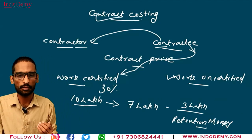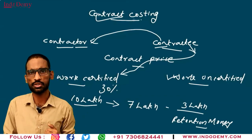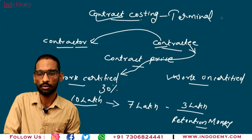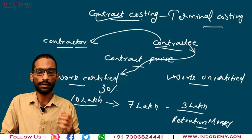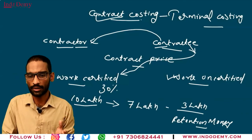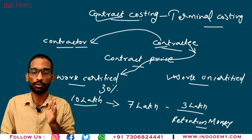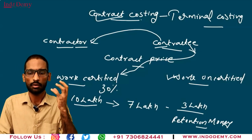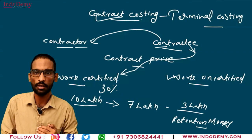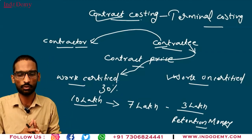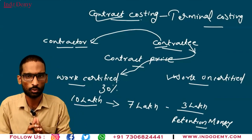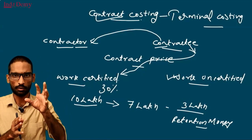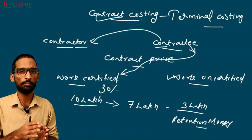Contract Costing is also known as Terminal Costing. To summarize: parties are Contractor and Contractee; the total amount paid by the contractee to the contractor for completing the work is the Contract Price; the engineer certifies work as Work Certified or Work Uncertified; and retention money is withheld from payments. We will discuss problems in the next video. Thank you.